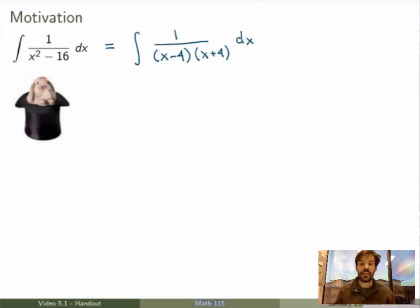But here's where the magic comes in. So what I'm going to do is the following. I'm going to rewrite the fraction here as follows: 1 over 8 times 1 over x minus 4 minus 1 over x plus 4.